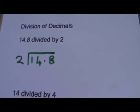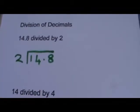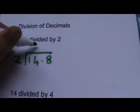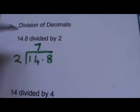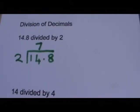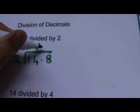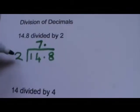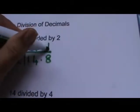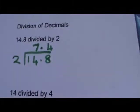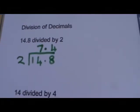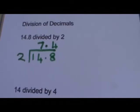Okay, so 2s into 14 goes 7. So we've got 7 in the answer. There's no remainders, so we don't have to worry about the remainder. We've reached the point, so we've put the point in the answer. 2s into 8 go 4. So 14.8 divided by 2 is 7.4.